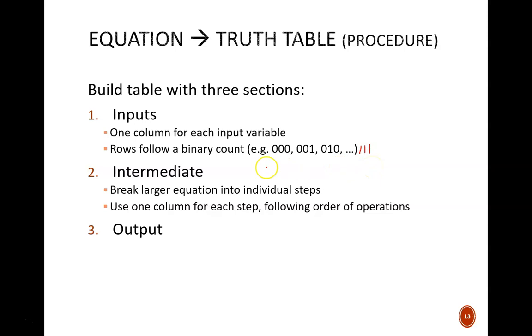The intermediate section is where we break down the lengthy Boolean equation into manageable steps. Perform these steps following the order of operations. For example, work out a NOT before an AND. At the end of those steps, we obtain an output column.